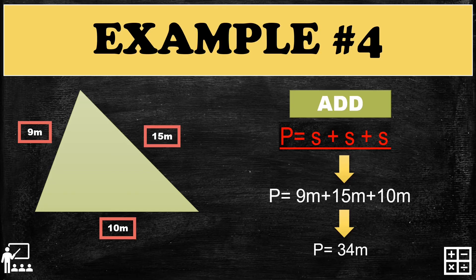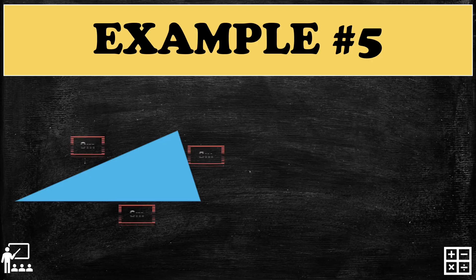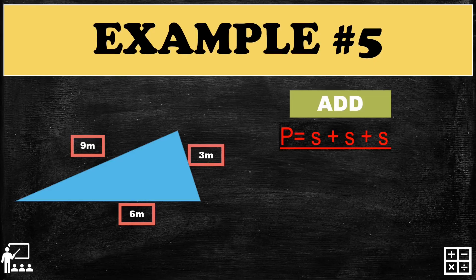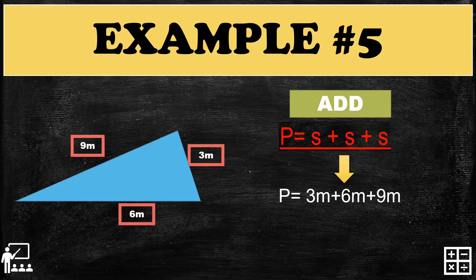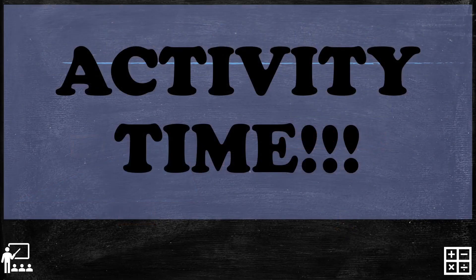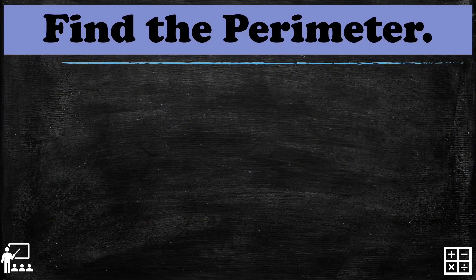Let's try one last example before your activity. Here we have another scalene triangle, which also has no equal sides. Using the formula P equals S plus S plus S, substitute the sides and solve. The perimeter of this scalene triangle is 18 meters.